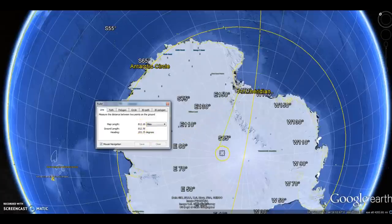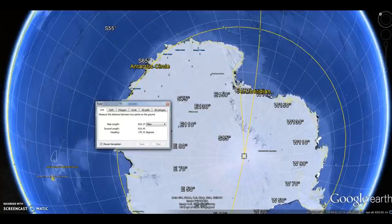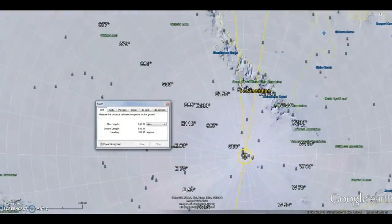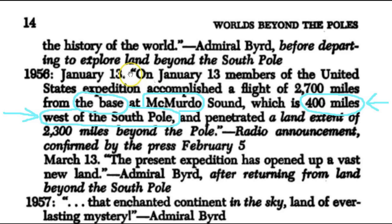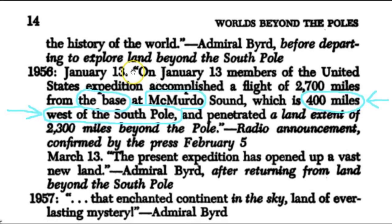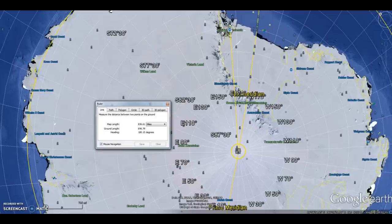As you can see here, I've got the ruler tool sitting right on McMurdo Base. And when I draw a line to the geographic South Pole, it's over 800 miles. It's about 835 miles from McMurdo Base, a research station, to the geographic 90-degree South Pole.